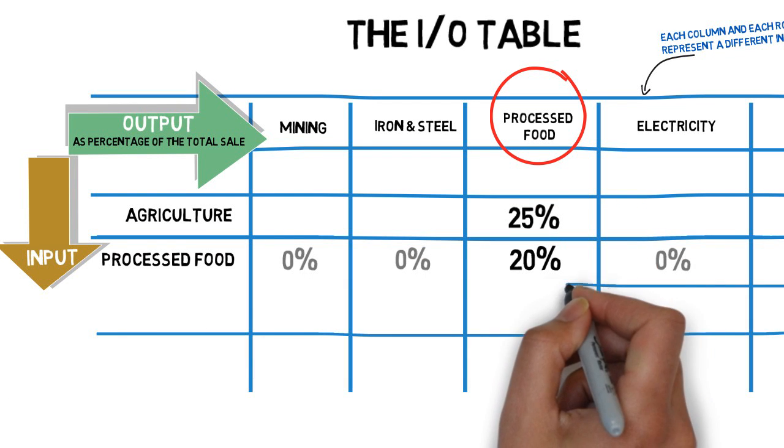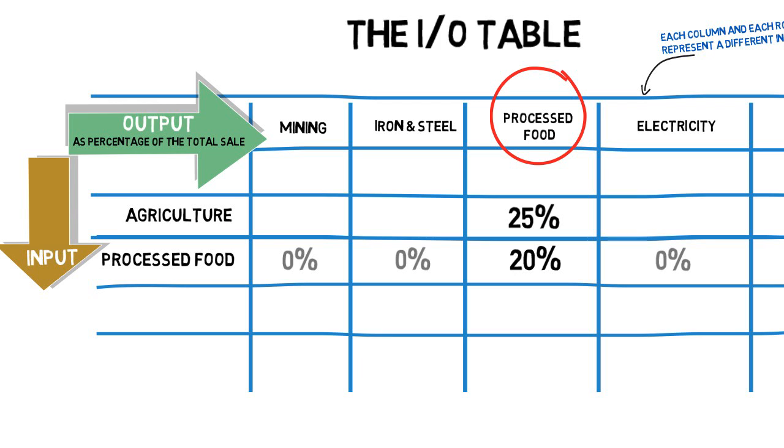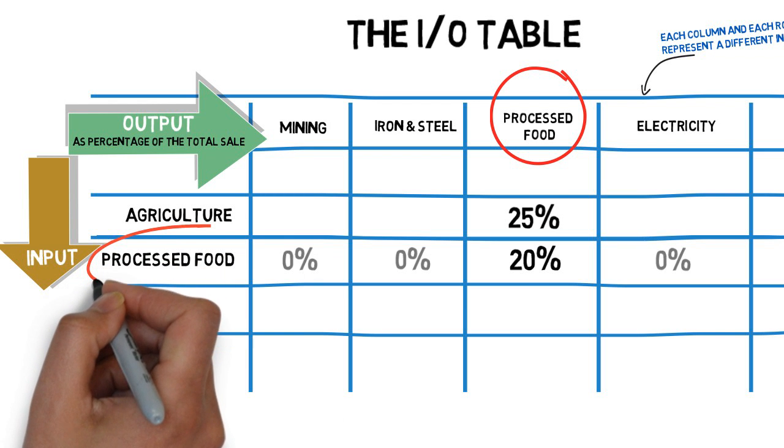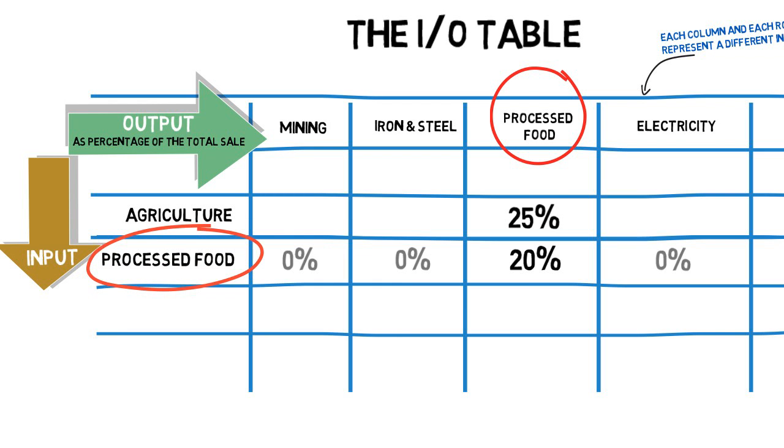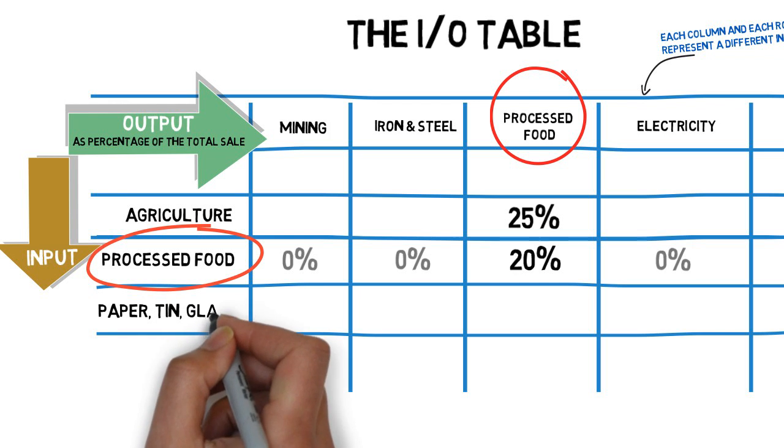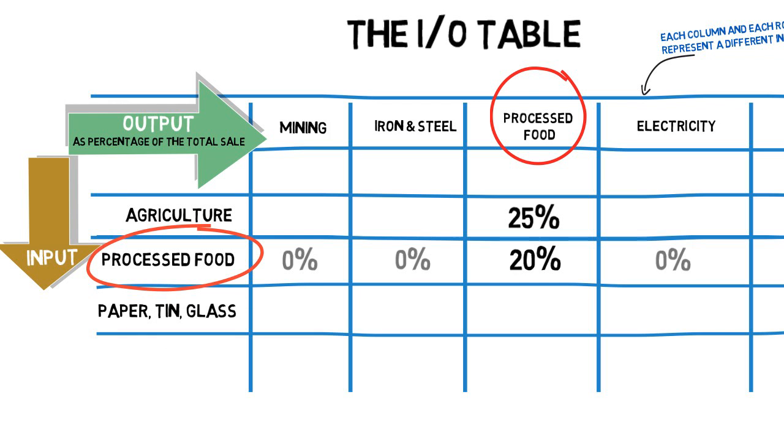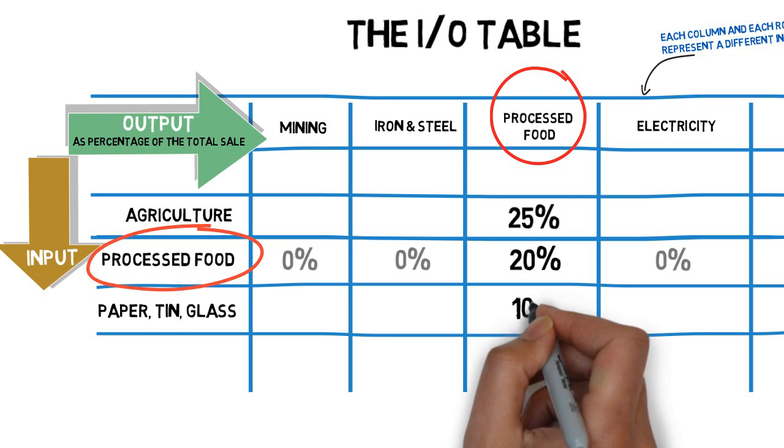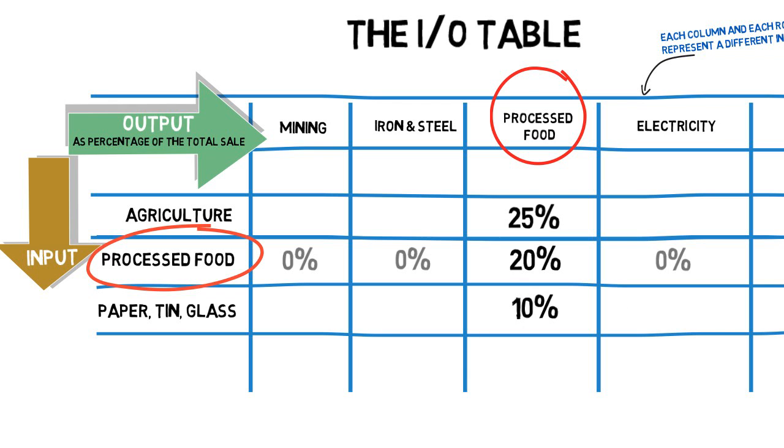Then there's the processed food sector itself. It accounts for 20% of the total inputs, just as it did 20% of the total outputs. It makes sense. The value of all inputs is the value of output. And what processed food sells to itself is what it buys from itself. The manufacturing sector provides other inputs too, typically packaging from the paper industry. And sheet metal for tins and glass for bottles, say 10%.